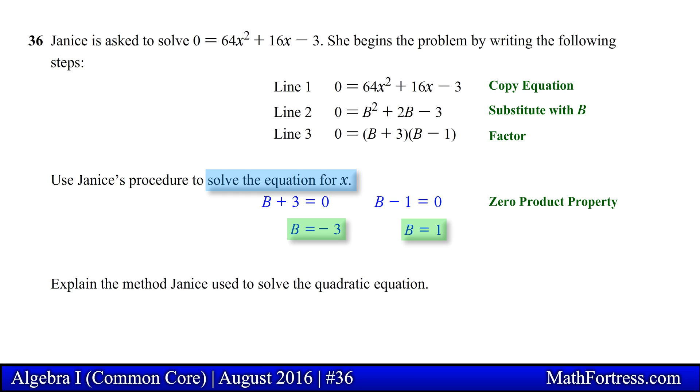Notice that the problem is asking us to solve for x and not b. We need to replace the variable b with an expression in terms of x. By comparing the equations of line 1 and line 2 we can determine the variable expression for b. Notice that the linear term in both equations from line 1 and line 2 must equal to each other. The quadratic terms should also equal to each other. Equating the linear terms with one another and solving for b we obtain b is equal to 8x.